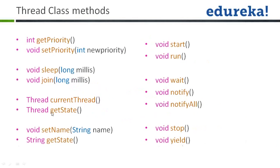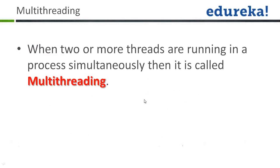The thread methods available are: getPriority(), setPriority(), sleep(), join(), currentThread(), getState(), setName(), getName() — note that one returns a Thread and the other returns a String. Also: void start(), run(), wait(), notify(), notifyAll(), stop(), and yield(). These are the different methods available with threads. You can try each and every one of them one by one.